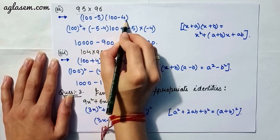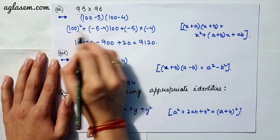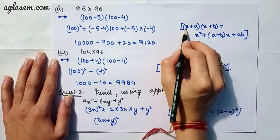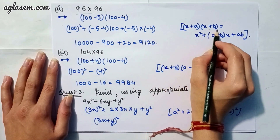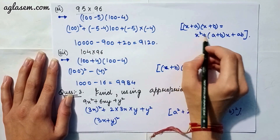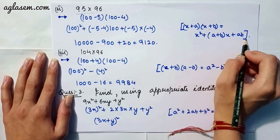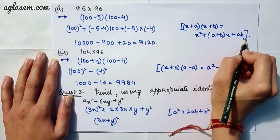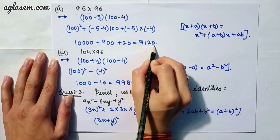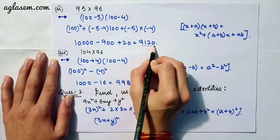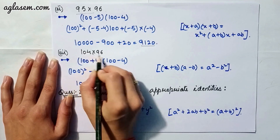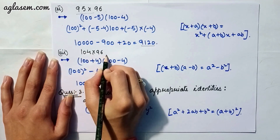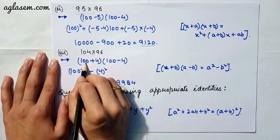Moving to our second part: 95 × 96. We write 95 as (100 − 5) and 96 as (100 − 4). Applying the same identity (x + a)(x + b) = x² + (a + b)x + ab, our answer is 9,120.